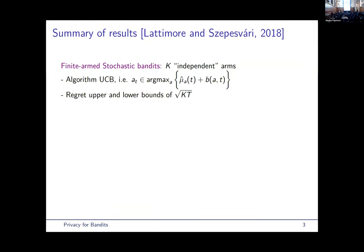So before discussing the cost of privacy in the regret, let me give a brief summary of results in the non-private literature. So in this work, we study three settings of bandits. The first one is finite-armed stochastic bandits, where we have K independent arms in the sense that sampling rewards from one arm does not give any information about the reward of other arms. The optimal algorithm for this setting belongs to the class of UCB algorithms, where the idea is to choose the action with the highest upper confidence bound at each step, where the upper confidence bound is a sum between an empirical mean and a bonus term for exploration. And the